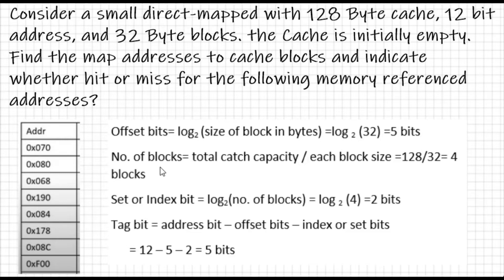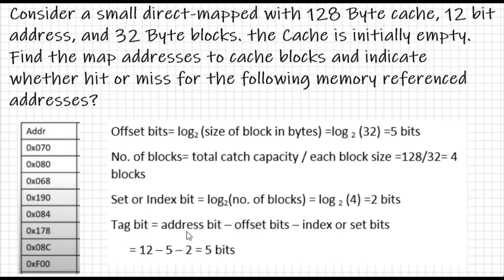Similarly, to calculate the set or index bit, we need the number of blocks. Number of blocks = total cache capacity (128 bytes) divided by block size (32), giving 4 blocks. Set or index bit = log base 2 of 4 = 2 bits. For tag bits: address bits minus offset bits minus index bits = 12 - 5 - 2 = 5 bits.